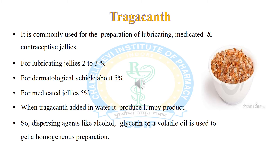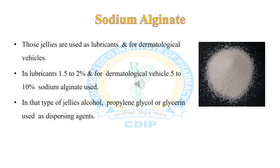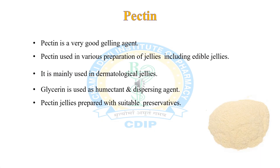Sodium alginate is used in the preparation of lubricating jellies and dermatological vehicles. In lubricating jellies, 1 to 1.5 to 2 percent sodium alginate is used, while in dermatological vehicles 5 to 10 percent is used. Alcohol, propylene glycol, or glycerine are used as dispersing agents to avoid the formation of lumps.